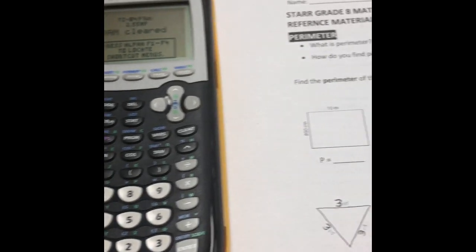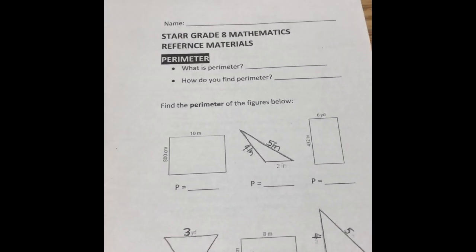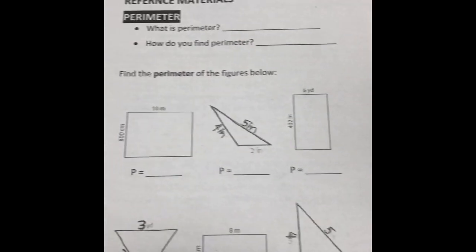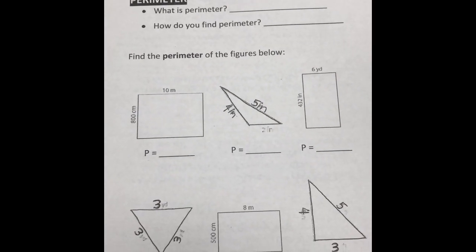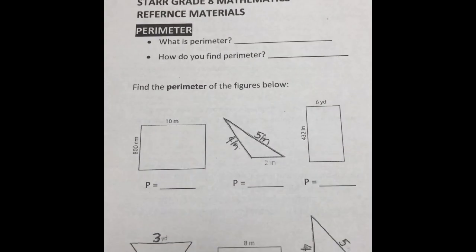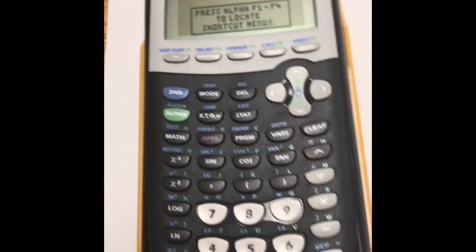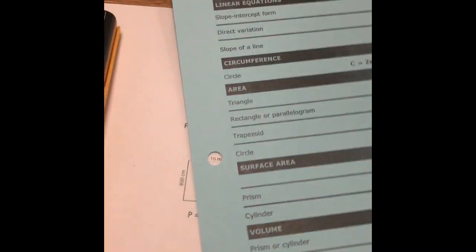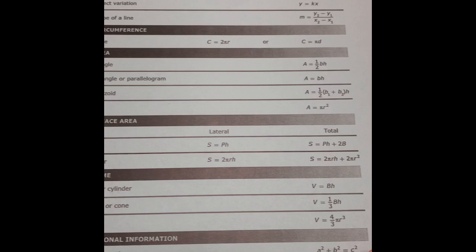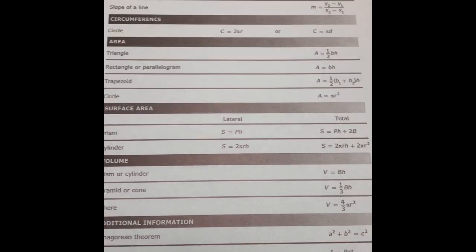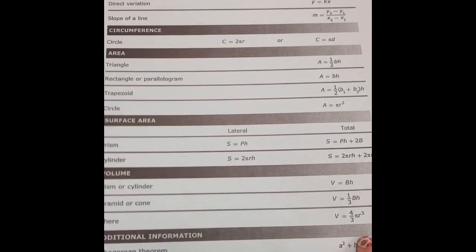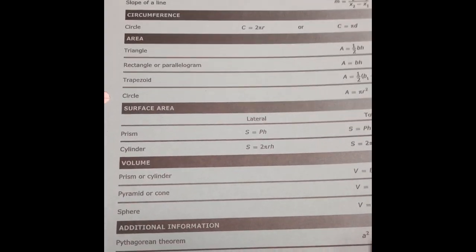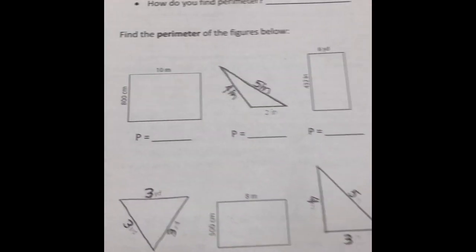All right, ladies and gentlemen, welcome to unit 3. Unit 3 is all about geometry and perimeter and area and all that good stuff. The good news in 8th grade is not only do you have this wonderful device, your calculator, but you also have this fabulous piece of artwork, which is all of your formulas for everything you're going to need to know. So we're going to use both of those today. We're going to start with perimeter.